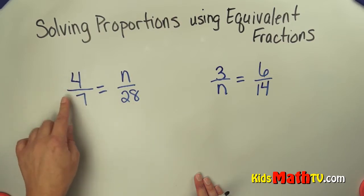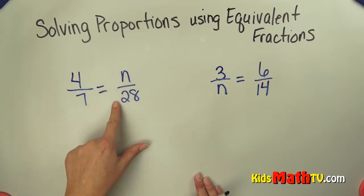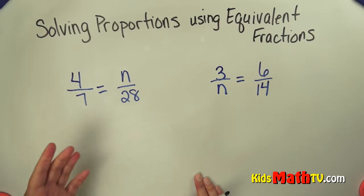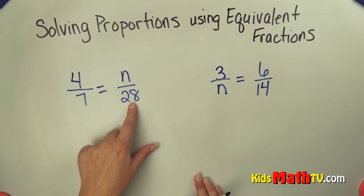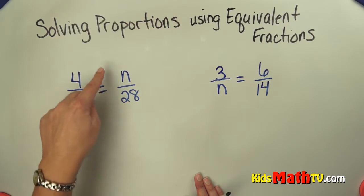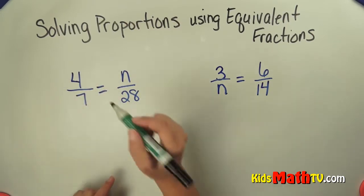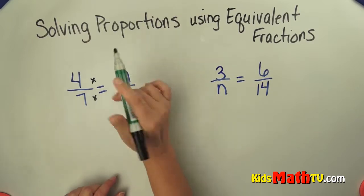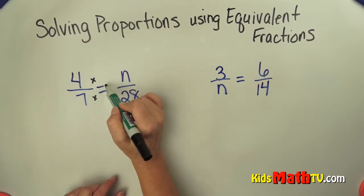So 4/7 equals something over 88. I can use my knowledge of equivalent fractions. I know that 7 times some number will give me 88. If I multiply the numerator and denominator by the same number,